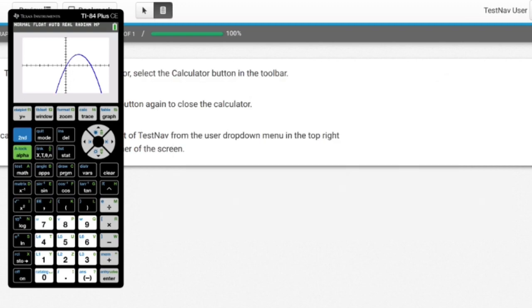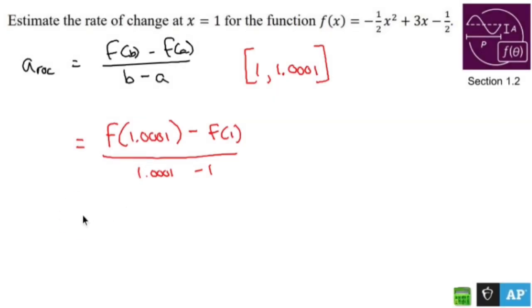2, donezo. All right. So after all of that, we ended up getting what? 2.0001. We ended up getting 2 here. Actually, that was 2.0002, wasn't it? I'm trying to remember what I got. 1.0001 minus 1. When you did the math, you got 2. And so we said 2.